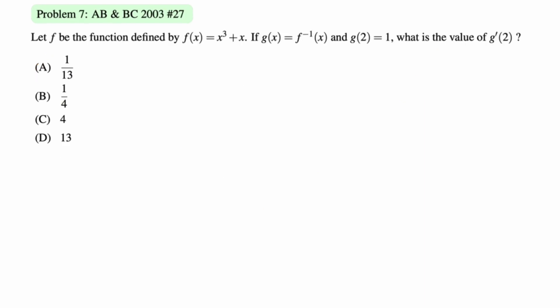Let f be the function defined by f of x equals x cubed plus x. If g of x is f inverse of x, and g of 2 is equal to 1, what is the value of g prime of 2? I start these problems the same way every time. I write down two ordered pairs. I write down one ordered pair that's on the inverse, so they just give us that, right? On g of x, we have the ordered pair 2, 1. Now I write down the ordered pair that's on the original function. So on f of x, we must have the ordered pair 1, 2.